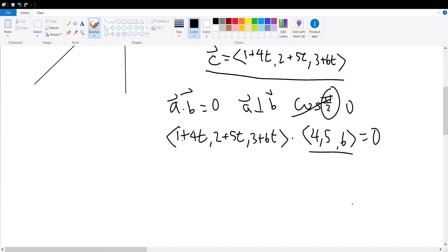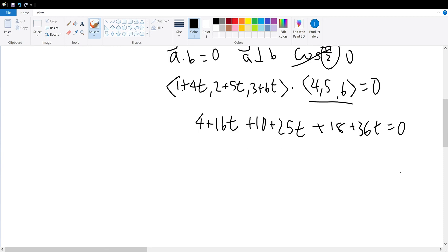So, we multiply the components by each component, the x component with the x component, the y component with the y component, and the z component with the z component, to get 4 plus 16t plus 10 plus 25t plus 18 plus 36t is equal to 0. And, we can be sure that the dot products, or the dot product of these two vectors will result in a scalar value, as to the cross product of two vectors will result in another vector.